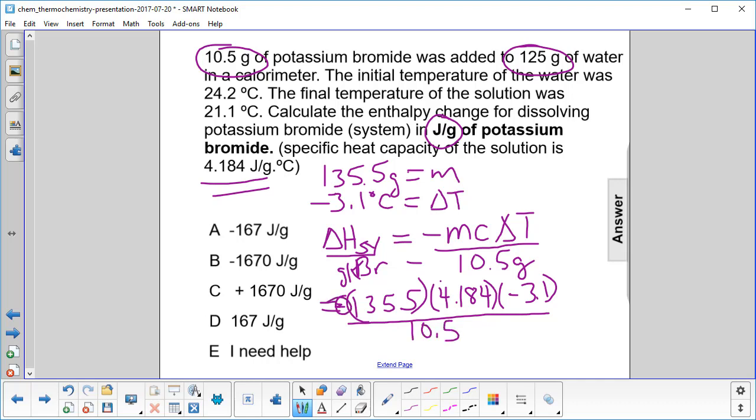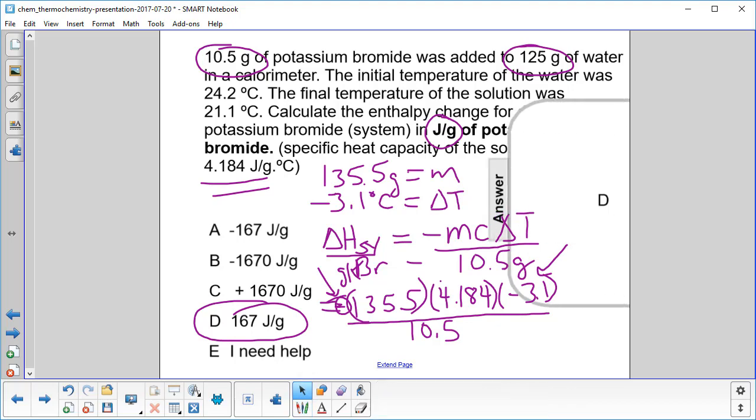The negatives are going to cancel and we're going to wind up with 167 joules per gram. See the negative there and the negative in the delta T. So the answer is D.